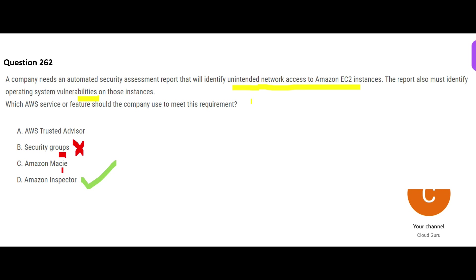Option C is Macie. Suppose you have a lot of documents in S3 and some have PII data — personal identifiable information like your social security number, passport numbers, or credit card numbers. You run Macie and it tells you which documents contain PII. That is a very different purpose, not linked to this use case at all.